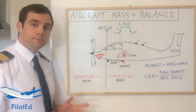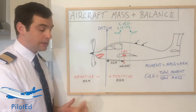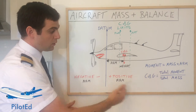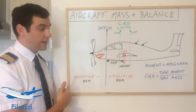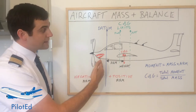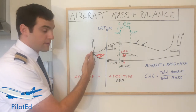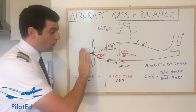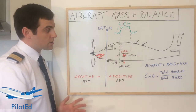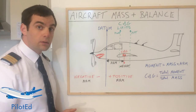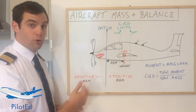So what is the datum? The datum point is where all the arms begin. Arms can be positive when they go aft of the datum, or negative as they come forward of it, and the datum can be anywhere. On many light aircraft it's on the nose, so all arms are positive. On larger aircraft it tends to be somewhere in the middle — it depends on the manufacturer where they decide to place that zero point.